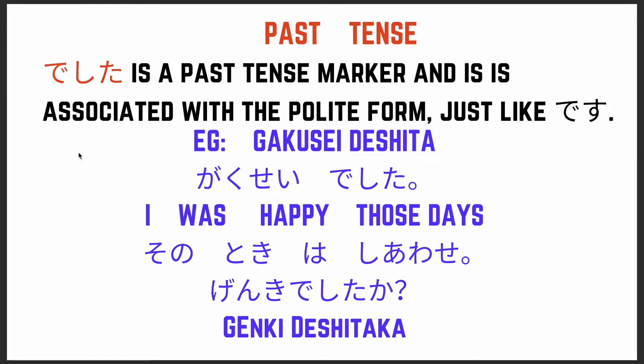We've seen sentences ending with aru and iru — so arimasu and imasu respectively. Aru and iru are used to denote existence, meaning 'there is' or 'there are.' They act as a connector between subject and predicate and have plenty of other uses as well. All of this has been covered, so if you've missed any of these, please check out the JLPT N5 grammar playlist. Please do subscribe so you don't miss out on any content.